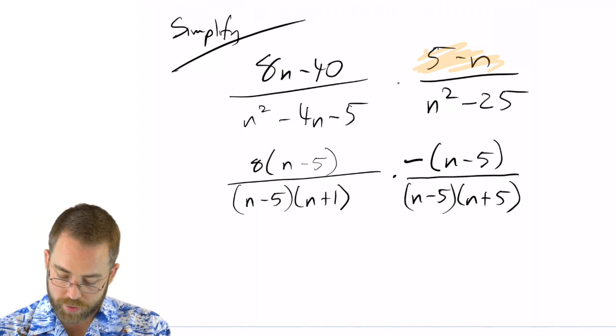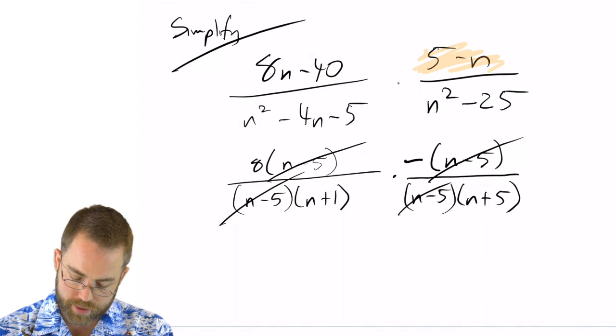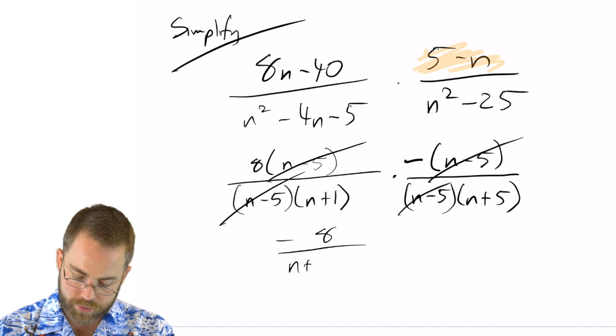All right. So now I go and I have a great big cancel party. This cancels with that. This cancels with that. And I am left with negative 8 over n plus 1 times n plus 5.